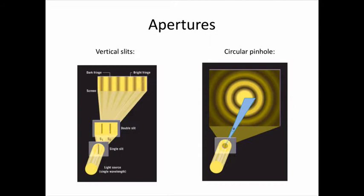Since light diffracts outwards around the edges of an aperture, in this case where the slits are vertical, the light is constricted in the horizontal direction, so the light spreads horizontally to make the fringe pattern that you see. For a round pinhole, the light spreads out in all directions from the circular hole, and so it forms the pattern of concentric rings that you see.